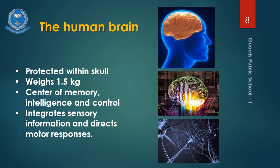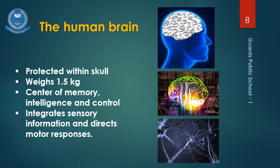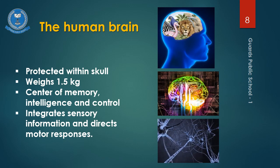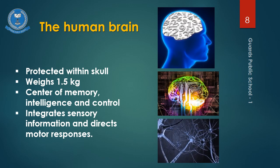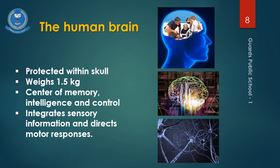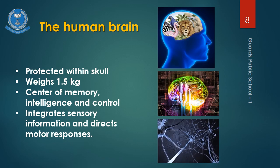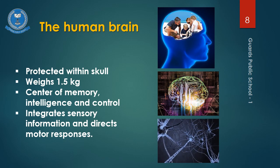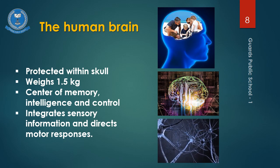The brain assembles sensory messages in a way that has meaning for us and can store that information in our memory. The brain controls our thoughts, memory and speech, movement of the arms and legs, and the functions of many organs within our body. Most importantly, the brain is the seat of our intelligence, learning and memory.